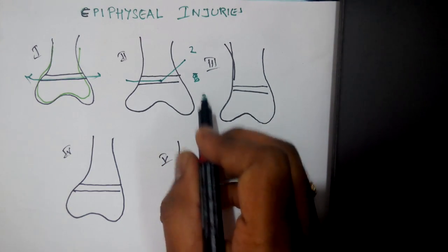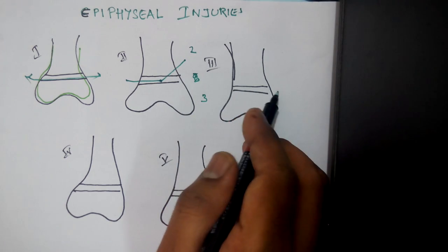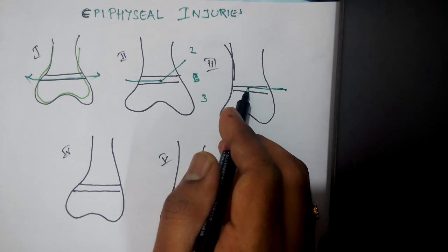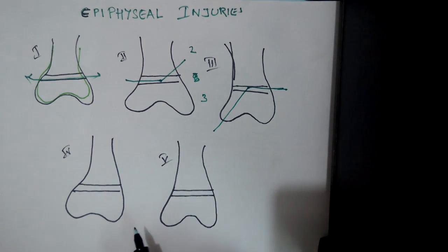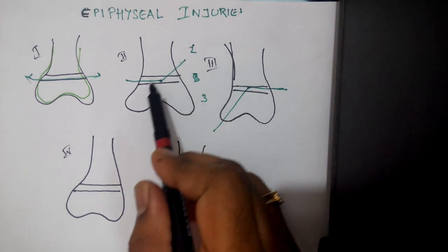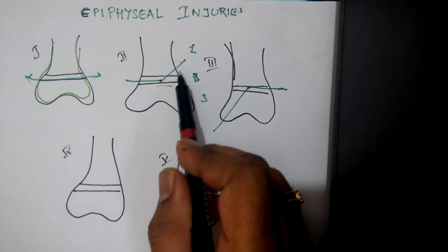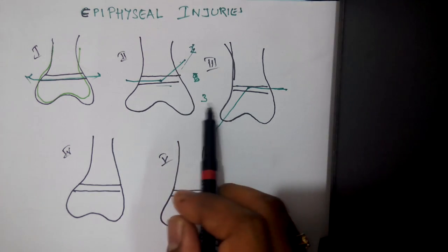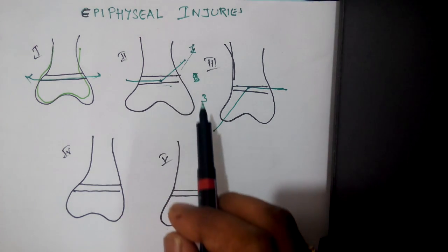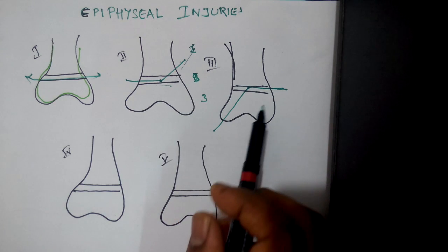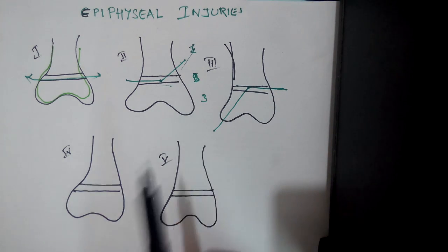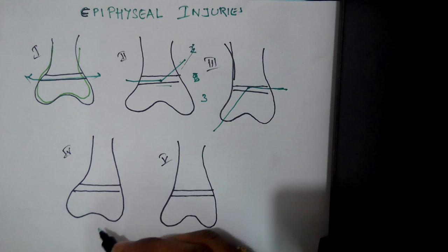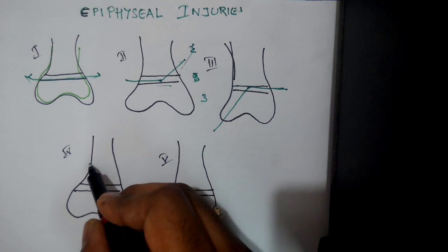Because 3 is below 2, the fracture line is through the physis coming down. So 2 is above. In type 2, the fracture line goes up. Type 3, because it comes after 2 and it's below 2, it traverses through the physis and comes down. The next is 4.